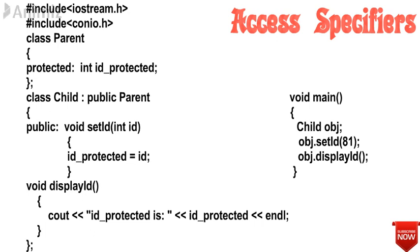In class Parent, the id_protected value is assigned to the id of class Child, which shares the same data using void main. When we call class obj, obj.setId is declared under Child and obj.display is declared under Child. The value 81 is assigned from Parent to Child. This demonstrates the concept of inheritance and using the protected access specifier — the protected value being used outside the class via inheritance.